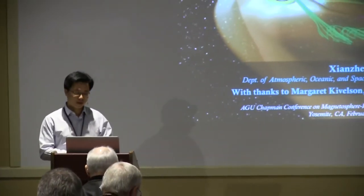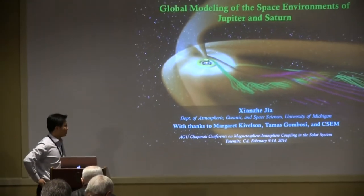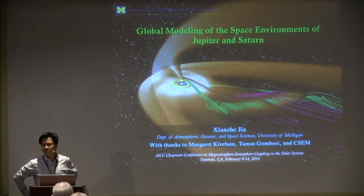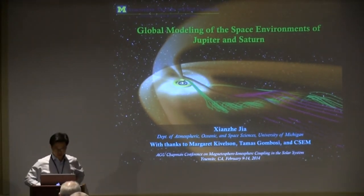I'd like to thank the conveners, especially Rick and Andy, for inviting me to talk about some of the modeling work we've been doing. I was originally asked to talk about modeling of Jovian-Saturnian magnetospheres, and I will be mostly talking about Saturn. You've heard a very nice talk by Ray yesterday covering the Jovian magnetosphere simulations, but given the similarities between the two, the things we learn from the Saturn simulations could be well applied to Jupiter as well.